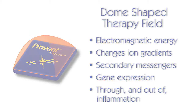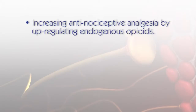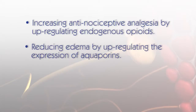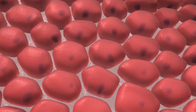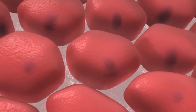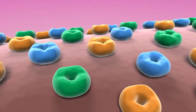These secondary messengers have varied effects, including increasing anti-nociceptive analgesia by inducing endogenous opioids that turn off pain signals at nerve endings, reducing edema by upregulating the expression of aquaporins, and up- or down-regulating a wide variety of other inflammation-related secondary messengers, resulting in a more rapid resolution of inflammation. Regenesis Biomedical's Life Science Laboratory researches the effect of Provant on human cells in an effort to better understand these mechanisms of action.